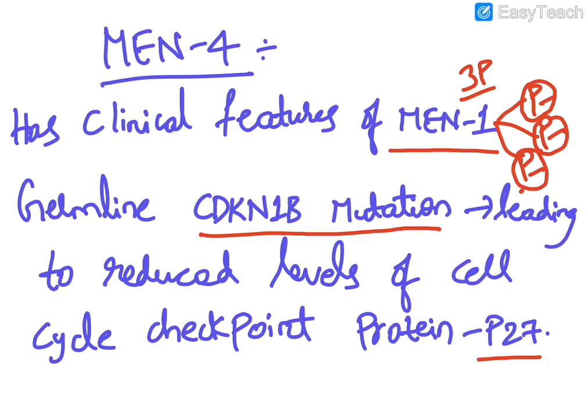MEN4 syndrome occurs due to a germline CDKN1B mutation, leading to reduced levels of the cell cycle checkpoint protein p27.